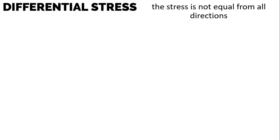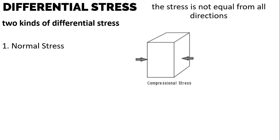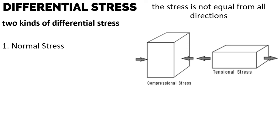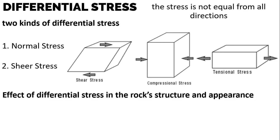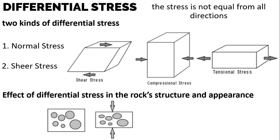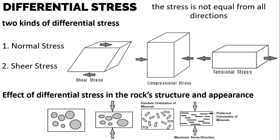Foliation is brought about by the preferred alignment of sheet silicate minerals with respect to the applied stress, called differential stress. Pressure defined as uniform stress acts equally from all directions, while differential stress does not. There are two kinds: normal stress, which causes objects to be compressed in the direction of maximum principal stress and extended in the direction of minimal stress; and shear stress, which causes objects to be smeared out in the direction of applied stress. Differential stress can cause rounded grains to become flattened in the direction of maximum stress, and also produces foliation.